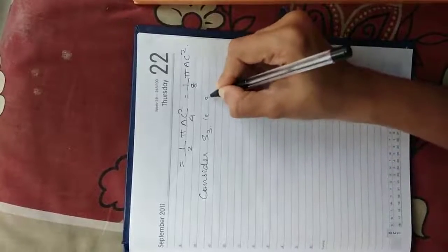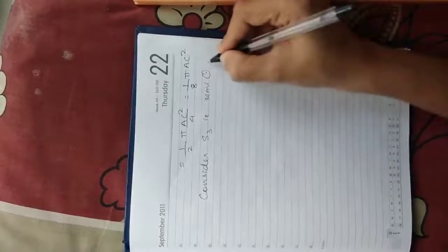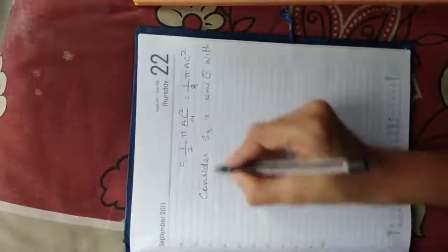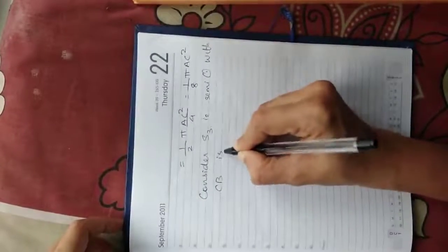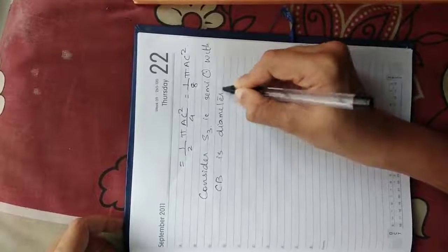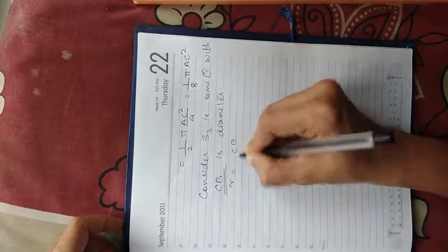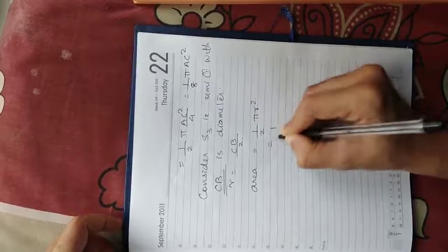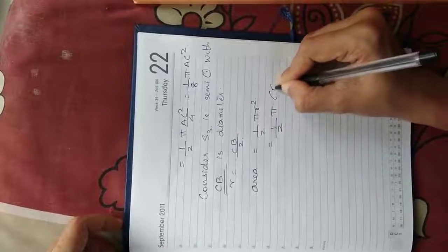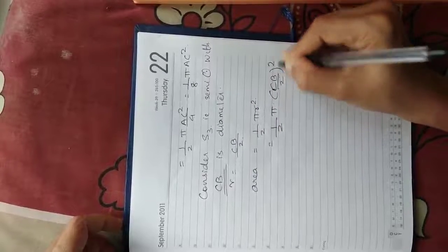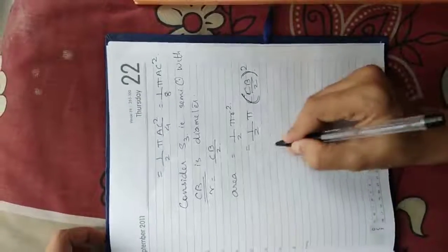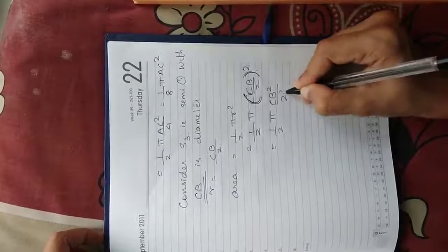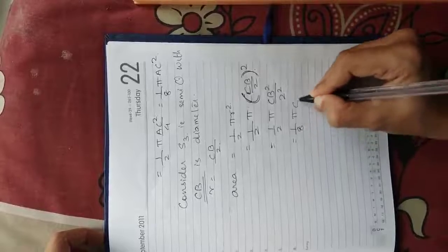That is the semicircle with AC as diameter. For the semicircle with CB as diameter: CB is the diameter, so the radius is CB/2. The area is equal to 1/2 into π into (CB/2)², which gives 1/8 π CB².